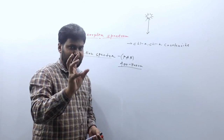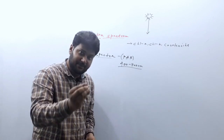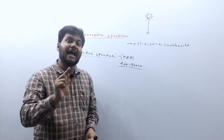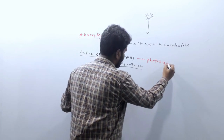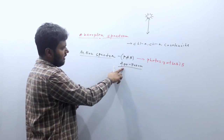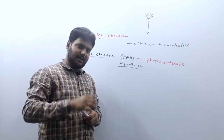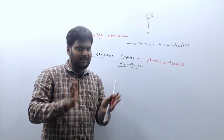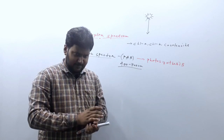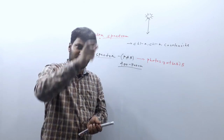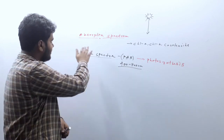So this action spectrum is for photosynthesis. This is for a process. In which wavelength, in which light, in which energy — within 400 to 700 nanometer — all wavelengths do not have similar rates of photosynthesis. In some wavelengths photosynthesis is higher, in some it is lower. We will discuss all of that. That will be our action spectrum.